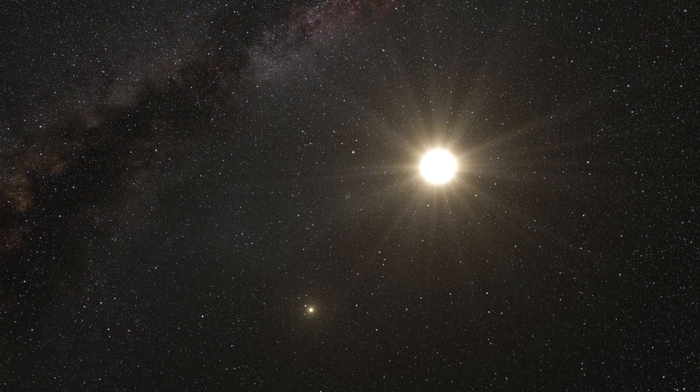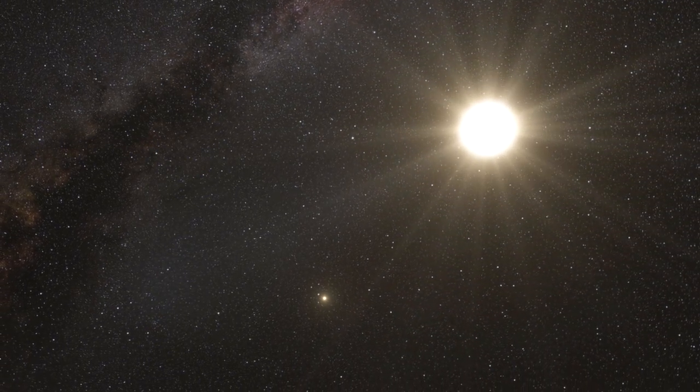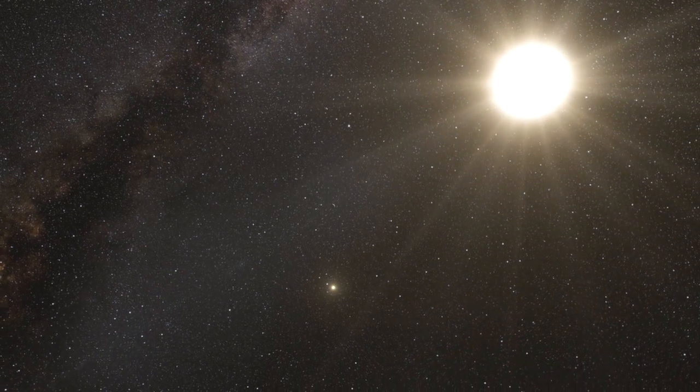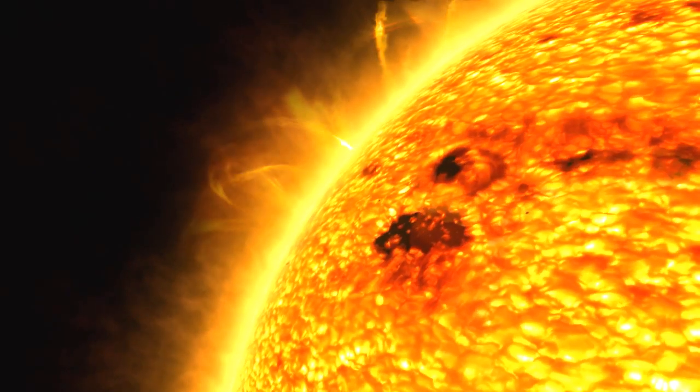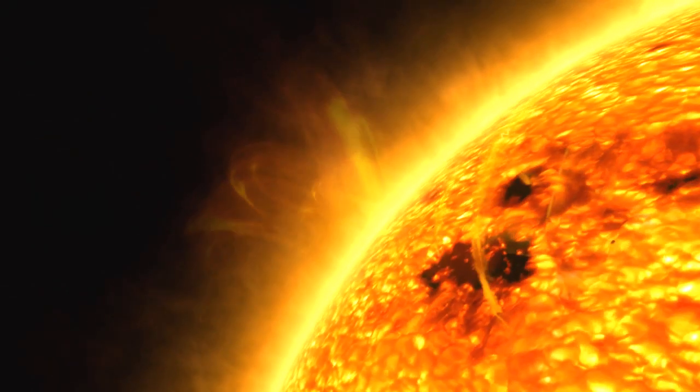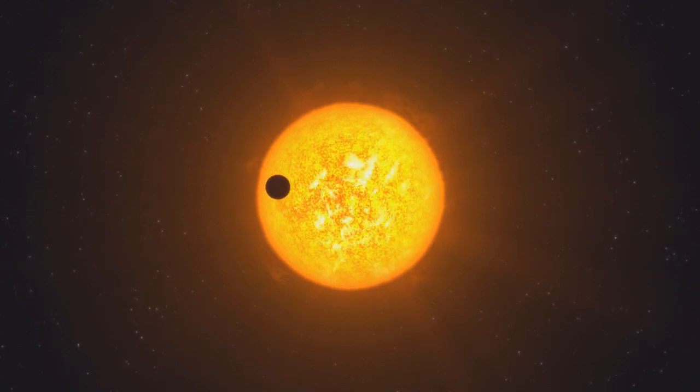Solar twins, solar analogues and solar-type stars are categories of stars based on how similar they are to our own Sun. Solar twins, stars almost identical to the Sun, are very rare. But the other classes, where the similarity is a lot less precise, are much more common.